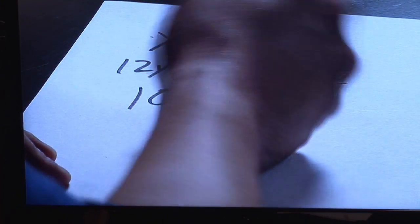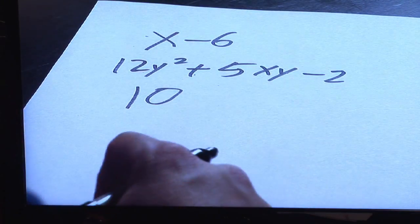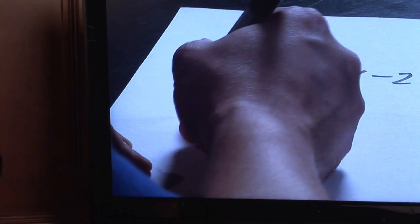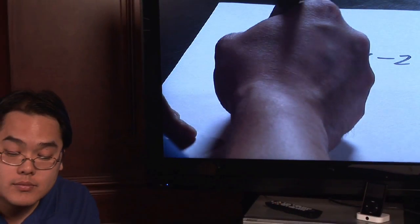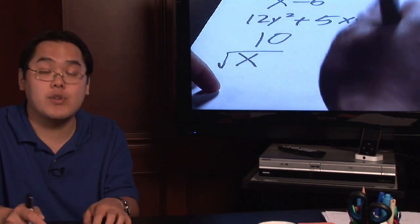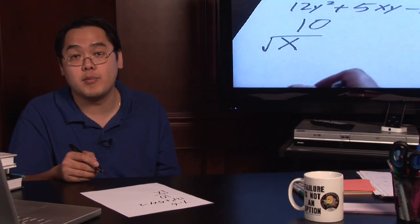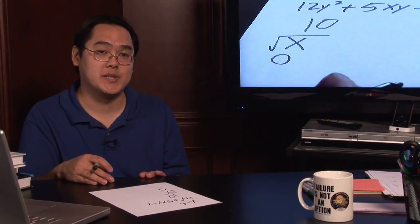Now I could go on and on, but even a number is an algebraic expression. You don't have to have variables. And by the same token, if you have something just called square root of x all by its lonesome, there's no number but you have a variable. Even the number zero is an algebraic expression.